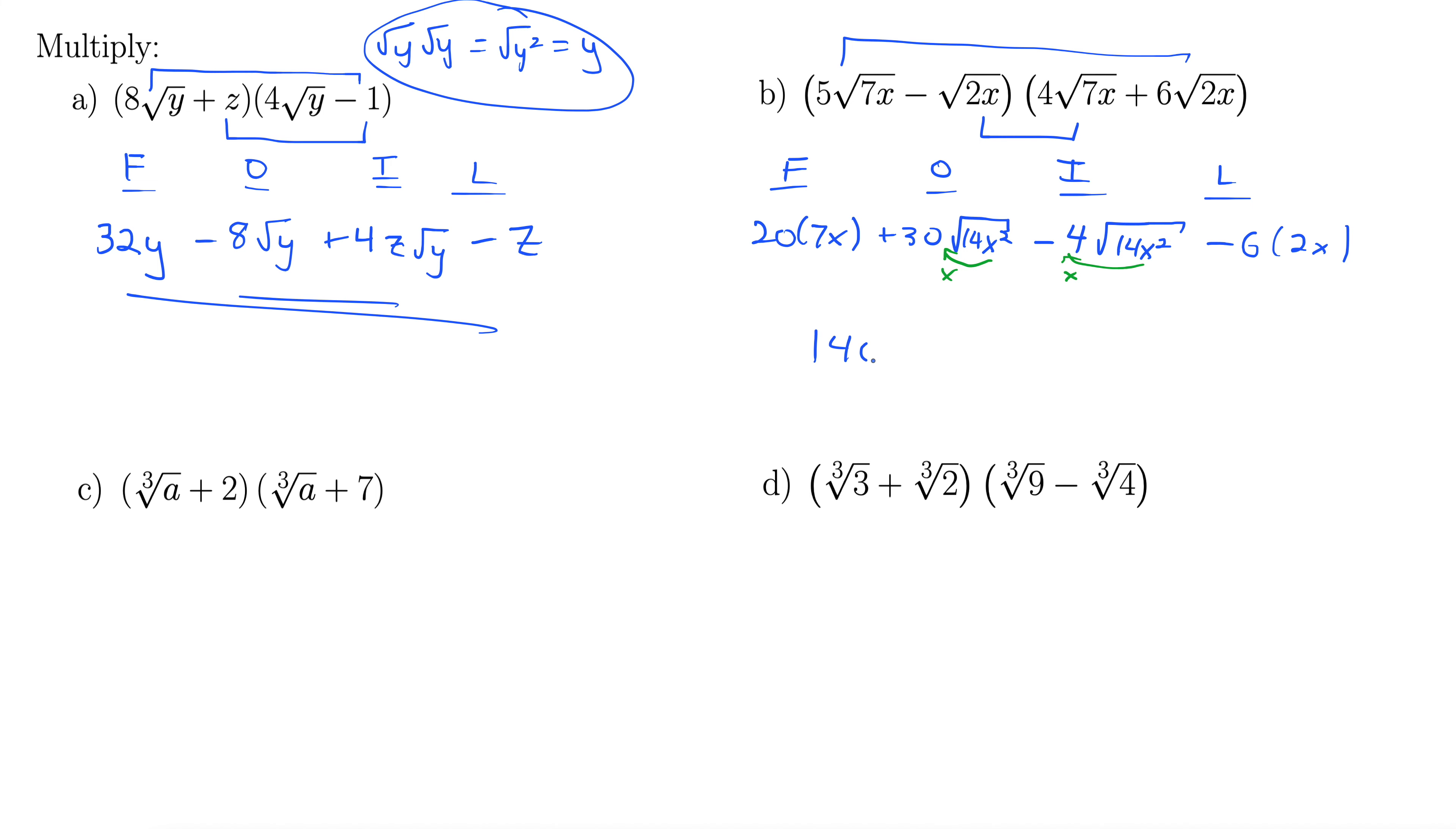20 times 7 is 140x plus 30x rad 14 minus 4x rad 14, and then we have minus 12x here. So now we can combine some like terms. These x terms go together, and then the combination of variables and radicals are the same, so these two can go together. 140x minus 12x gives us 128x, and then 30x rad 14 minus 4x rad 14 gives us 26x rad 14. We can't combine these two anymore because we need the variables and radicals to completely match.